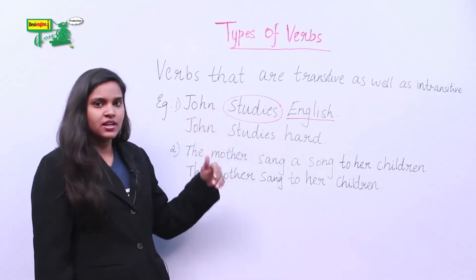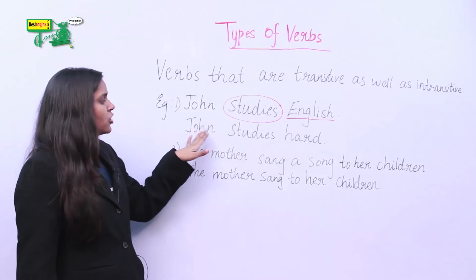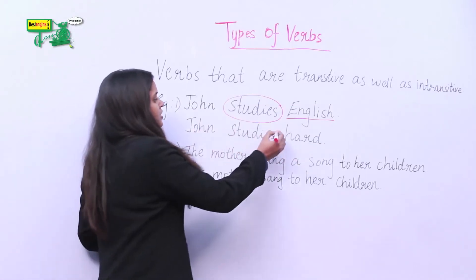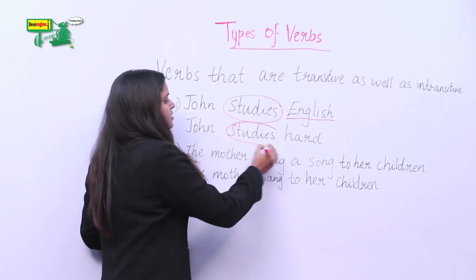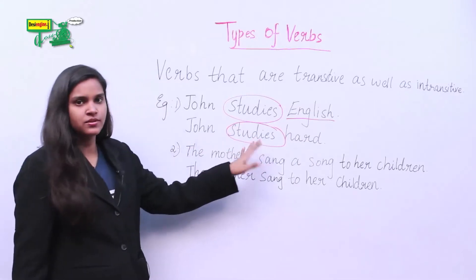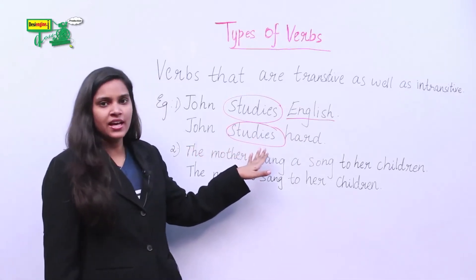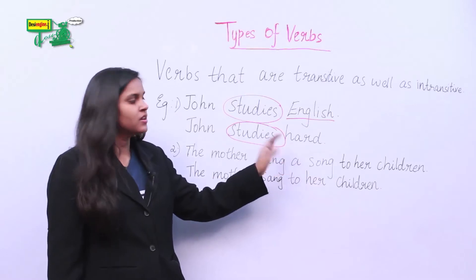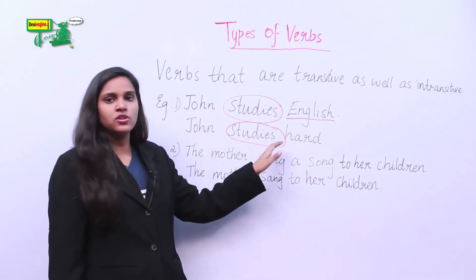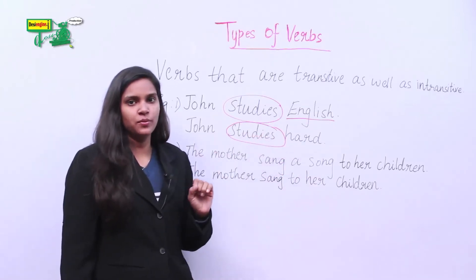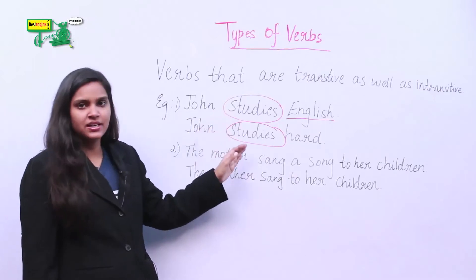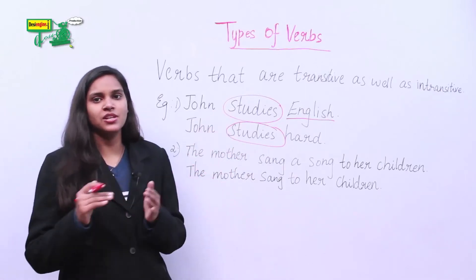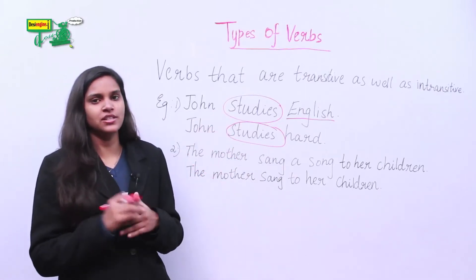Let's take another example: John studies hard. Here 'studies' is a verb, but it does not answer the question 'what?' Therefore this is our intransitive verb. The same verb 'studies' acts both as a transitive as well as an intransitive verb.